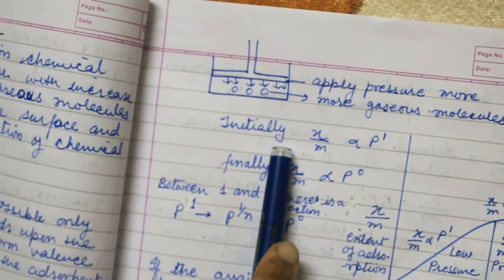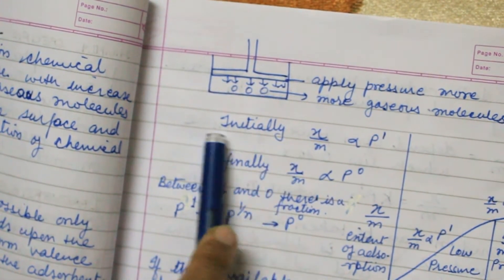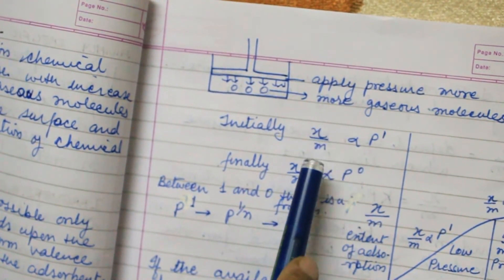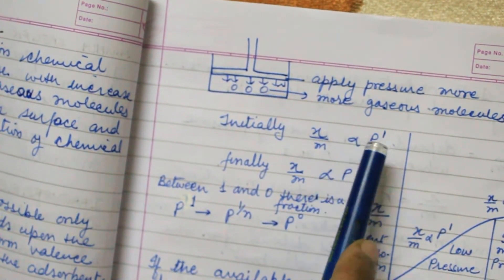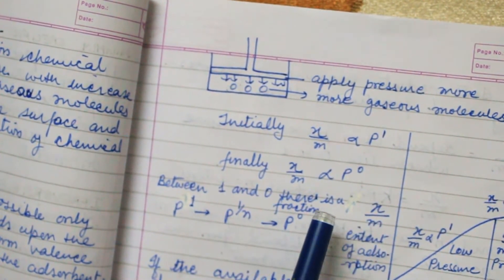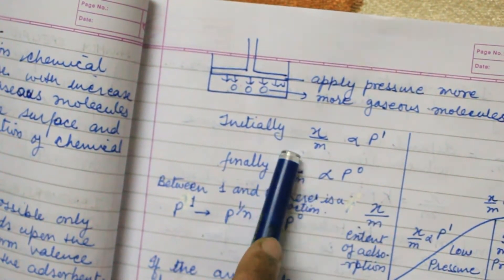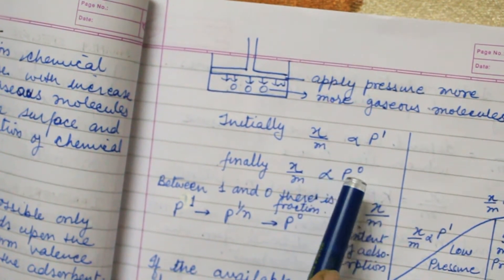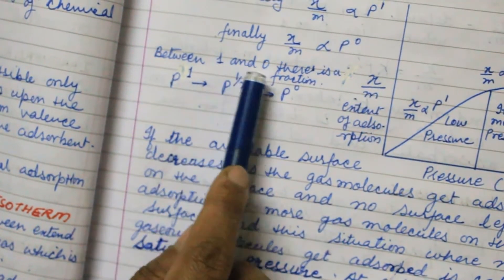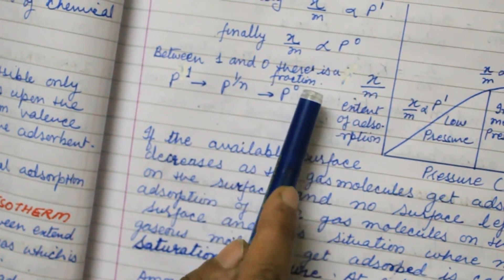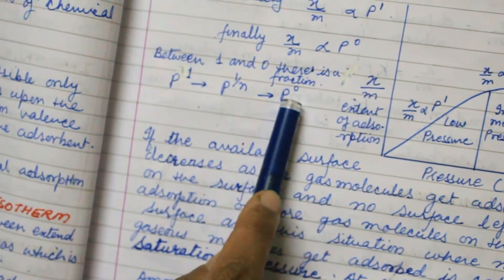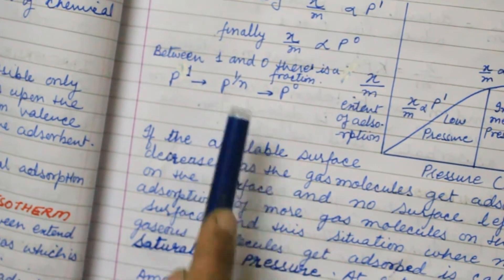Initially, when the reaction starts or gas gets adsorbed, X upon M is directly proportional to P¹. Finally, when high pressure is applied, X upon M is directly proportional to P⁰. So between the exponents 1 and 0, there is a fractional value 1/N.